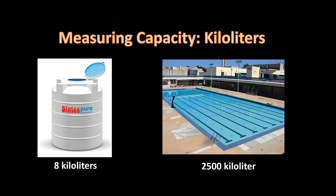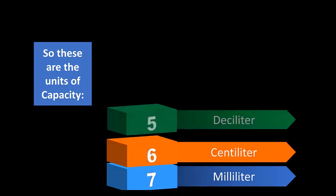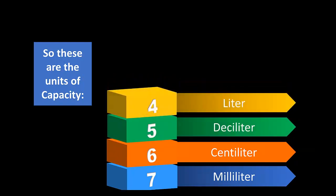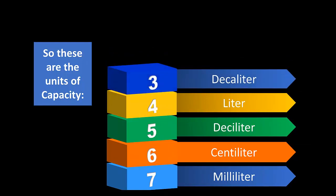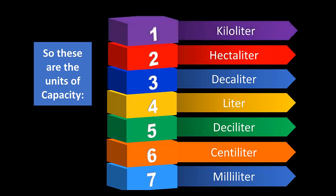I hope that gave you an idea of what a kiloliter is. Until now we have seen three units of capacity: milliliters, liters, and kiloliters. But there are more units of capacity. These are the units: milliliter, centiliter, deciliter, liter, decaliter, hectoliter, and finally kiloliter.